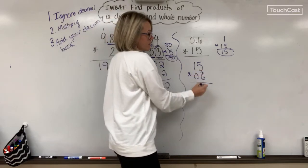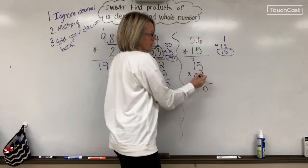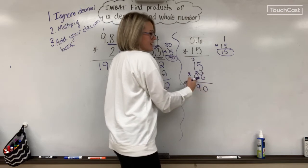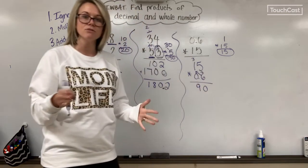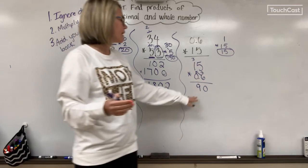I have 15 times 0.6, but I'm going to ignore my decimal. So 6 times 5 is 30, carrying my 3. 6 times 1 is 6, plus 3 is 9. When I multiply 5 by 0, I know I'd get 0, so I don't need to do anything there. So I have 90.